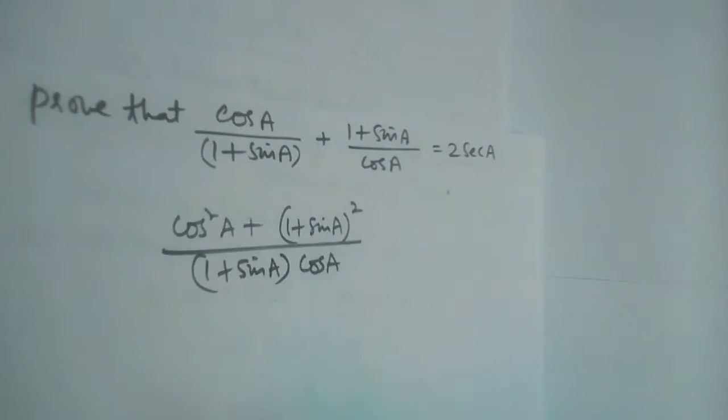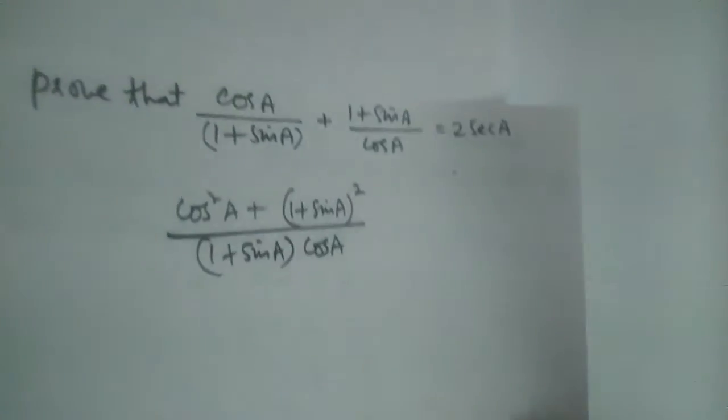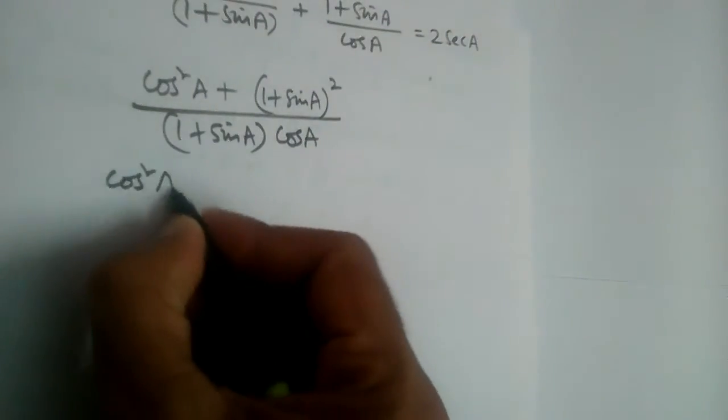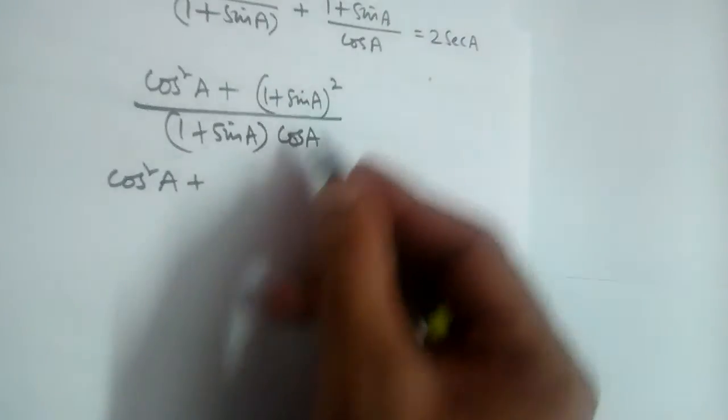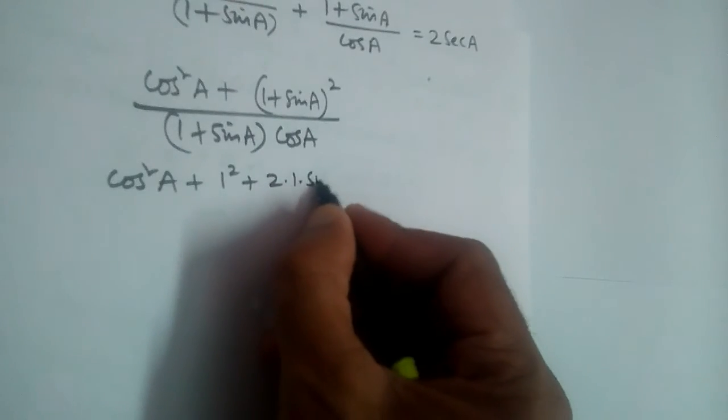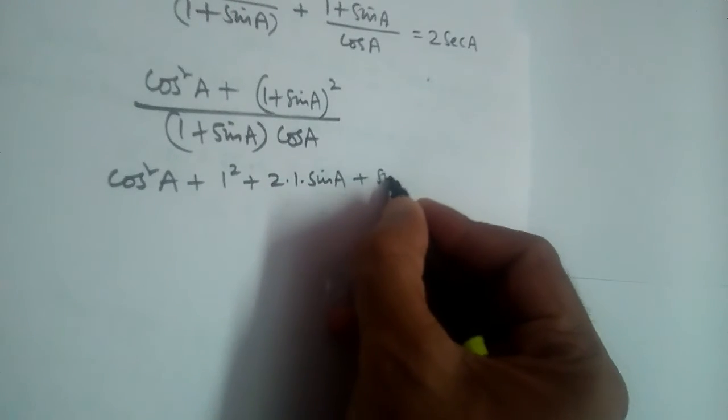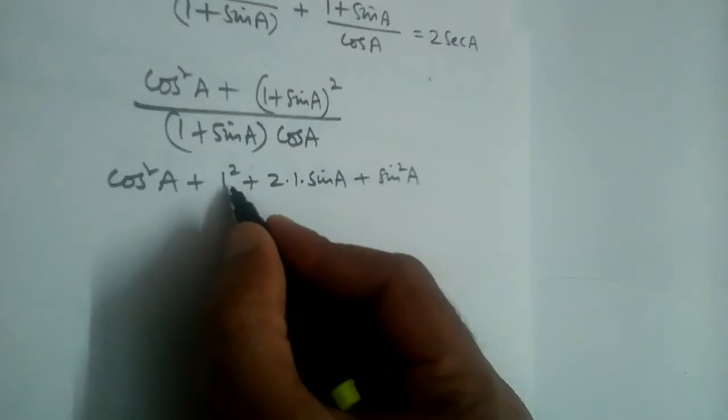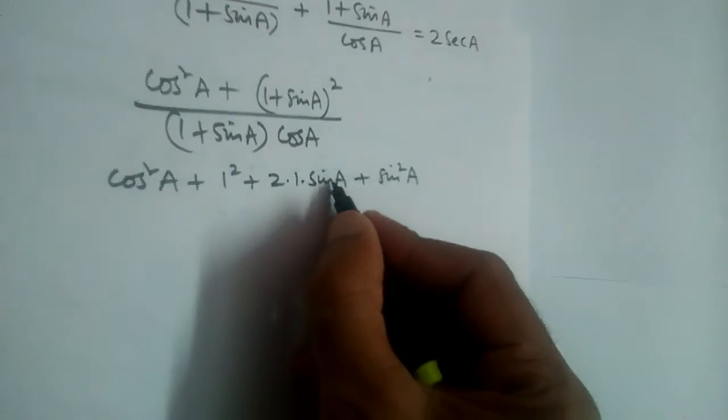Now cos square A plus let us expand this using A plus B whole square: A square plus 2 into A into B plus B square. Right? 1 square plus 2 into 1 into sine A plus sine square A.